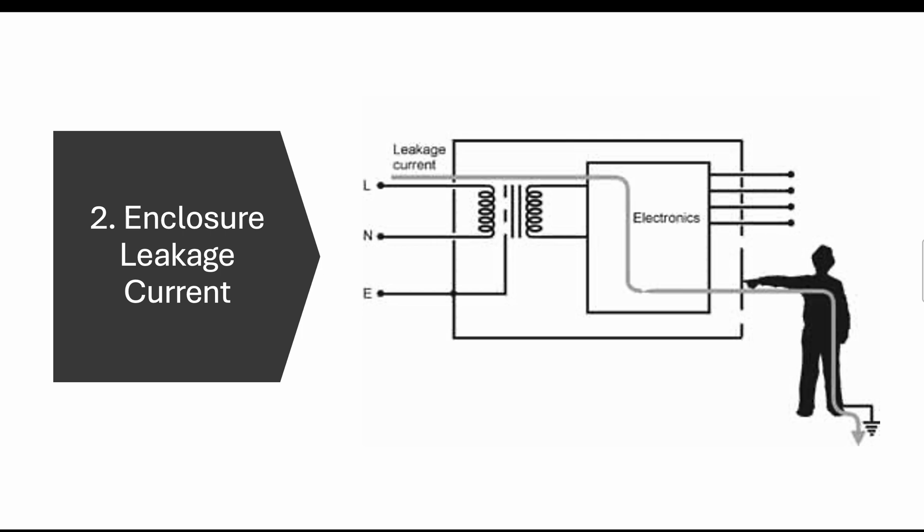Next we have enclosure leakage current. This current goes from the live wire all the way to the casing of the equipment. As you can see, the person is touching the casing of the equipment, which is probably a live conductor or an applied part, which creates a closed circuit allowing an electrical shock to happen. The cause of this is once again an insulation breakdown or faults in the enclosure. It could be a broken case which allows an exposed conductive part to be potentially touched by staff or a patient and, of course, lead to an electrical shock.